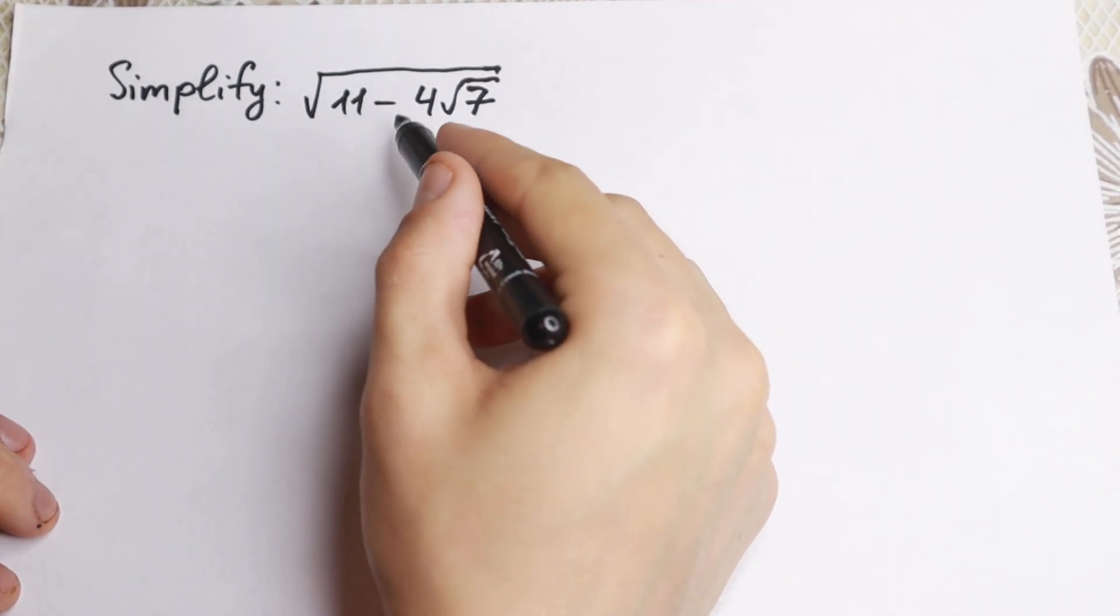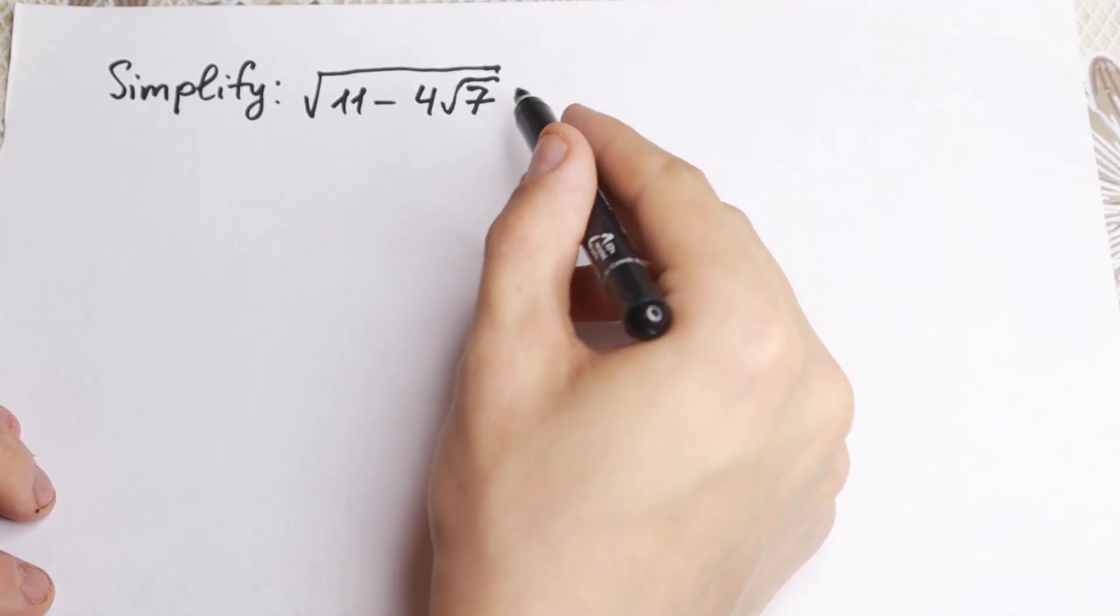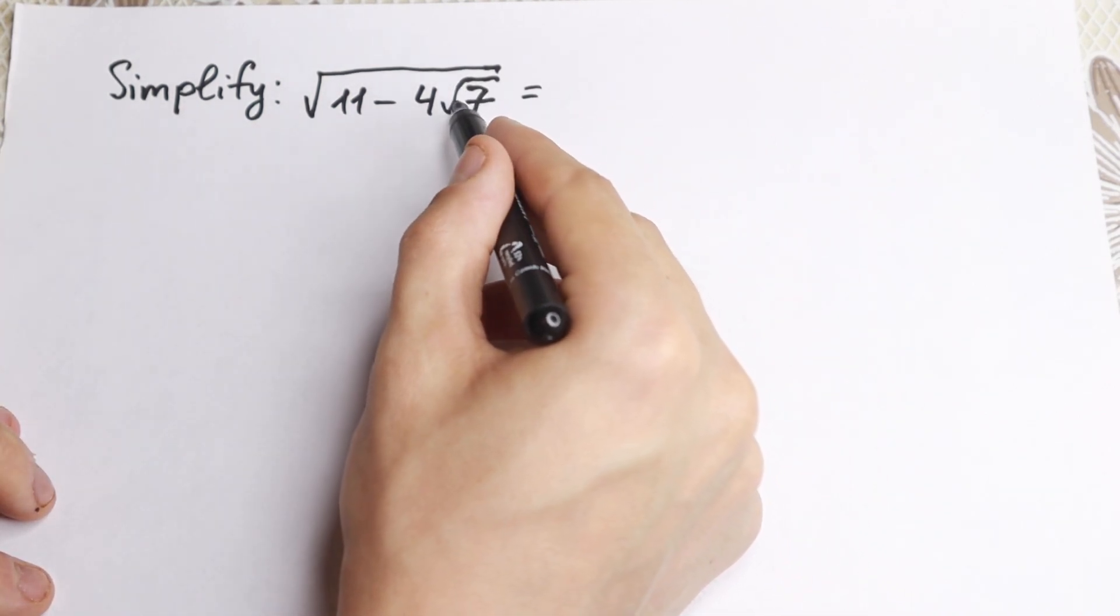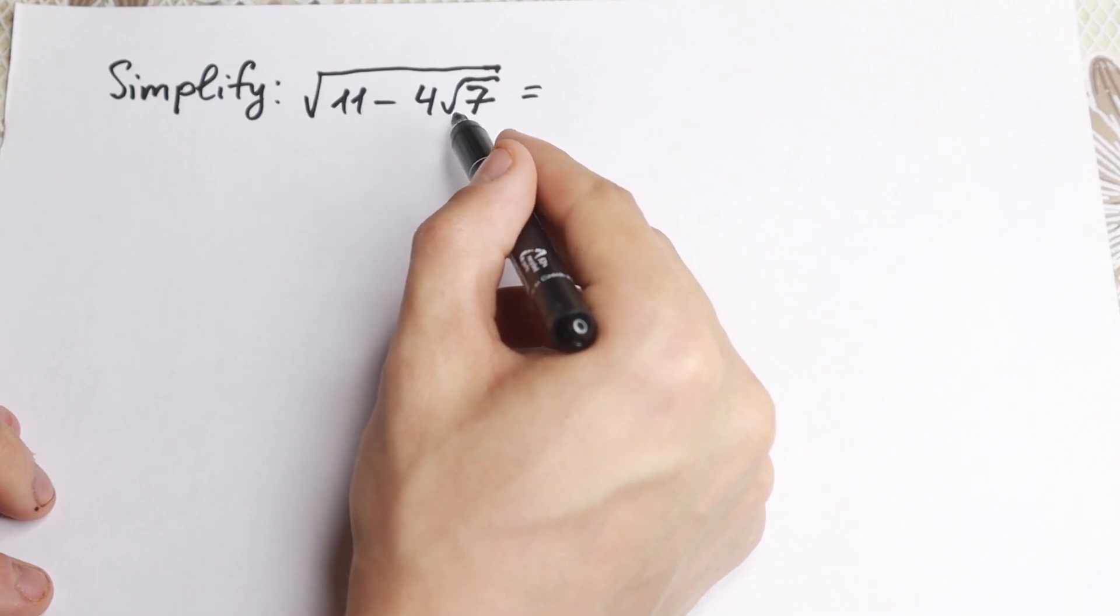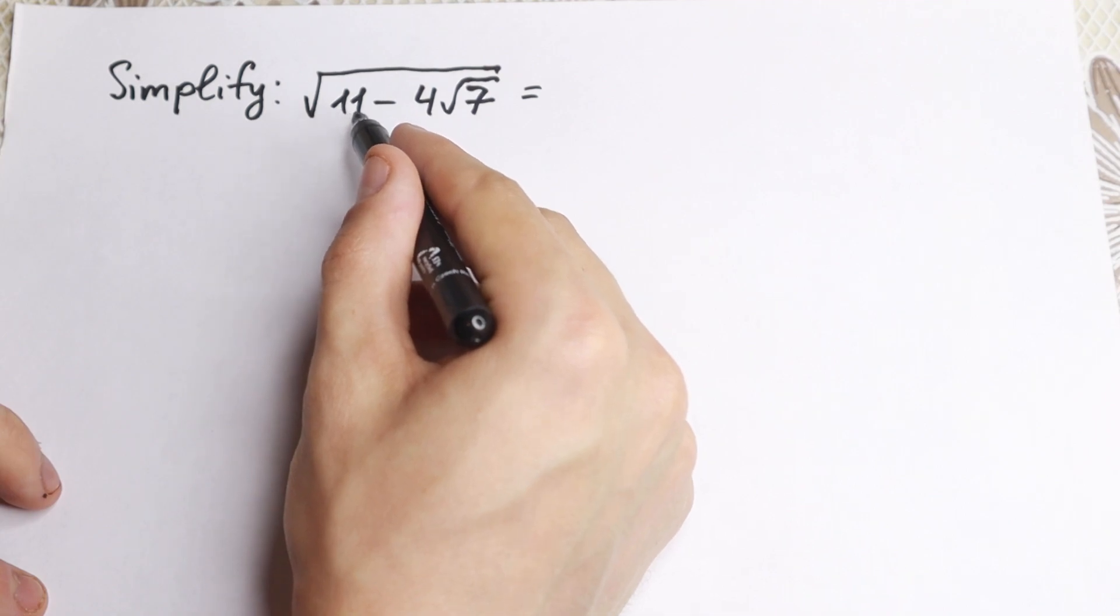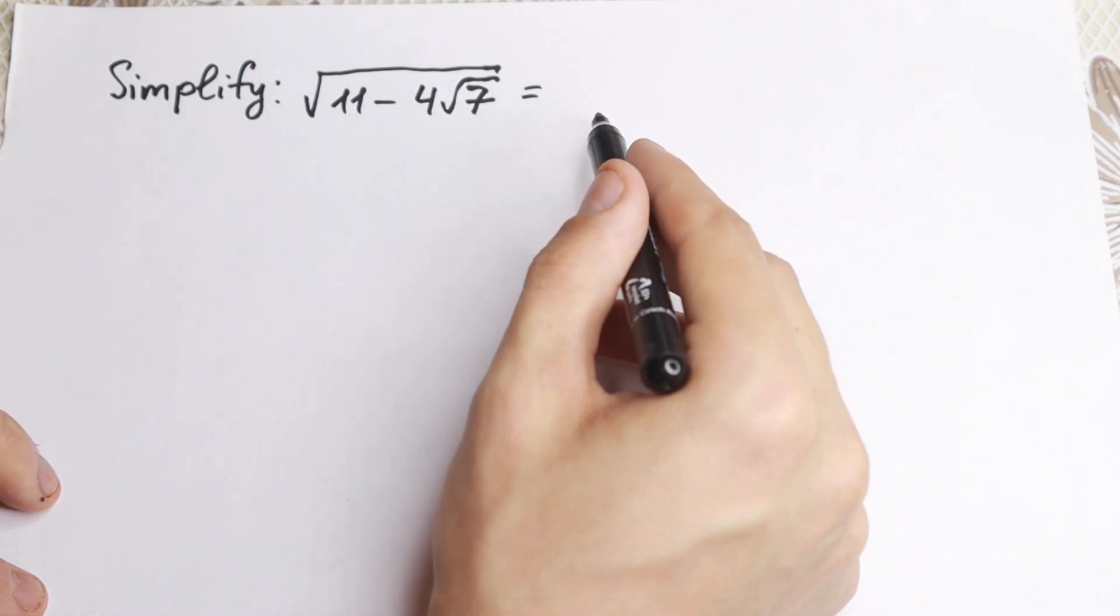We have square root of 11 minus 4 square root of 7. At first glance, this problem is really hard because we have a square root with a square root inside. Moreover, square root of 7 is not a nice number, this is not our table case. 11 is not good either, this is a prime number, so this problem seems really hard.